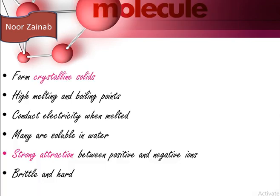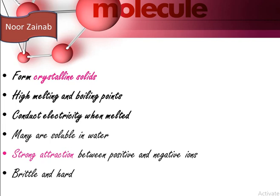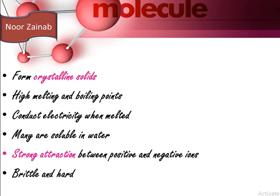Some of the most important properties of ionic compounds: first, they form crystalline solids and have high melting and boiling points. They conduct electricity when melted. Many of them are soluble in water. They consist of strong attractions between positive and negative ions, and they are mostly brittle.